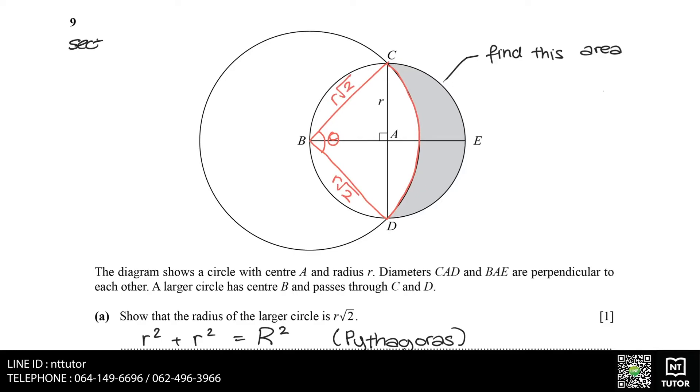The area of sector CBD can be found from theta over 360 degrees multiplied by pi multiplied by the radius of the larger circle squared, where the radius of the larger circle is R root 2 from part A. In order to find the area of the sector, we need the value of theta first, and we can find the value of theta by looking at triangle ABC.